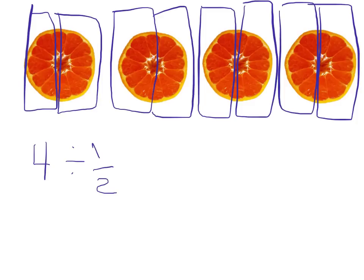Okay, so if we count up all these halves, we have 1, 2, 3, 4, 5, 6, 7, 8. So 4 divided by one half, 8. Let's see if that works out.